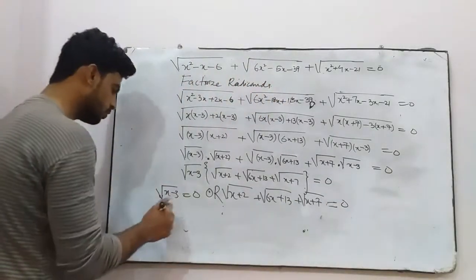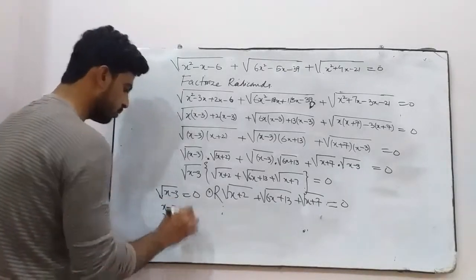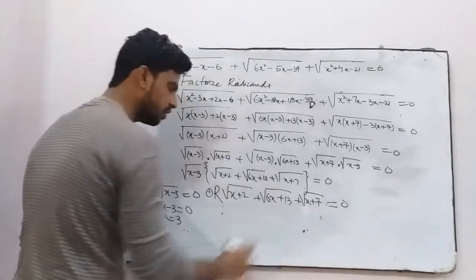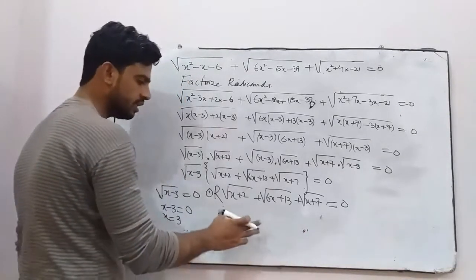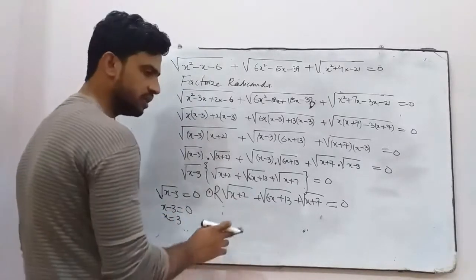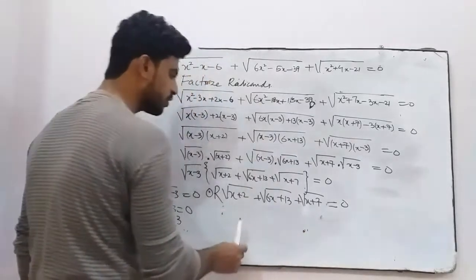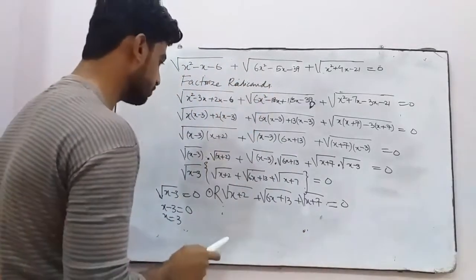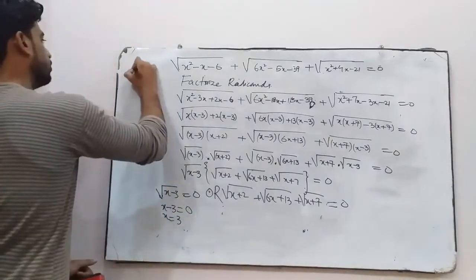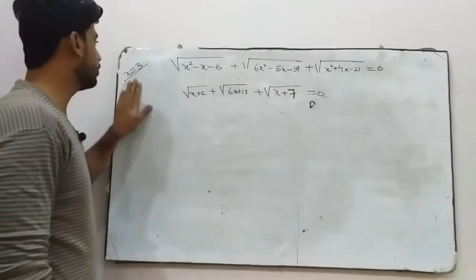To solve: squaring both sides of x minus 3 equals 0 gives x minus 3 equals 0, so x equals positive 3. We have got our first solution x equals 3. For the other equation, we can see there are three radicals containing linear terms — this can be solved using the Type 1 method shown in a linked video.